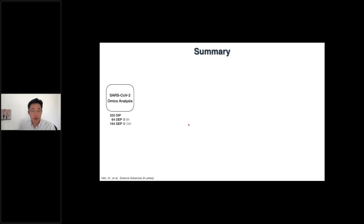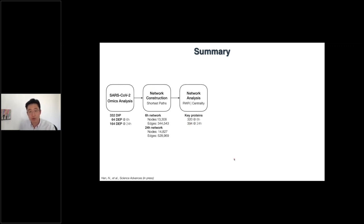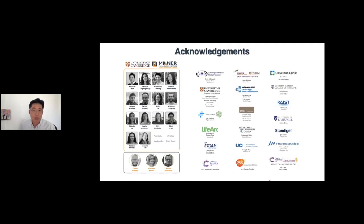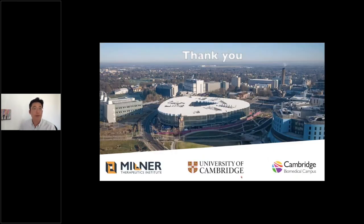In summary, we used two different proteomics datasets to construct two networks at two time points. We ran network analysis to identify key proteins, then ran network simulation to identify 200 drugs. We used an artificial neural network to cluster them and identify possible mechanisms of action. Finally, we performed two wet lab validations. I would like to thank my group, particularly Uchang and Mei, who put the effort into this project, as well as the funders and collaborators. Thank you.